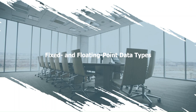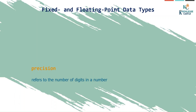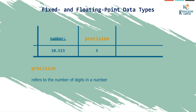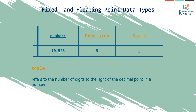Next are fixed and floating point data types — a little tricky but very important. When storing decimal numbers like 10.523, you must mention two things: precision and scale. Precision is the total number of digits in the number — here, five digits total. Scale refers to the number of digits to the right of the decimal point, which tells how many decimal places you want in your data.